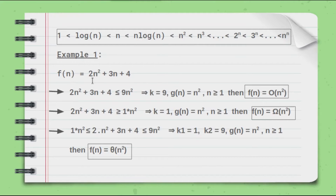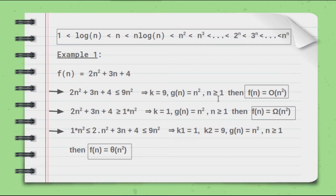Let's take this example where f(n) = 2n² + 3n + 4, and find the Big-O, Omega, and Theta notations. Big-O is the upper bound, Omega the lower bound, and Theta the tight or average bound. Here, 2n² + 3n + 4 is actually less than or equal to 9n². From the previous tutorial, we are looking for a constant k = 9 and g(n) = n², for all n ≥ 1.